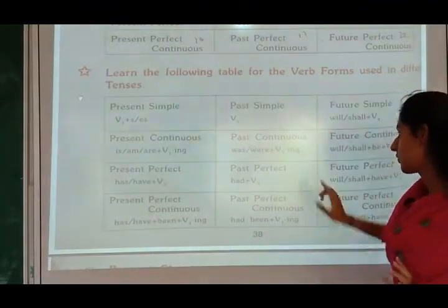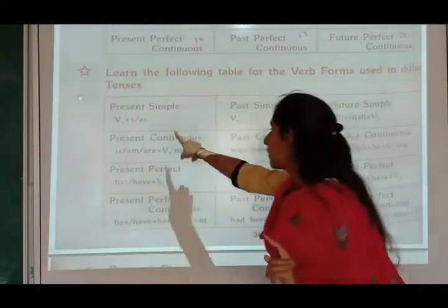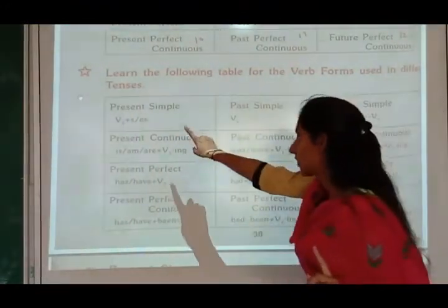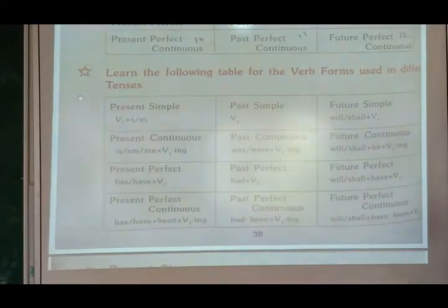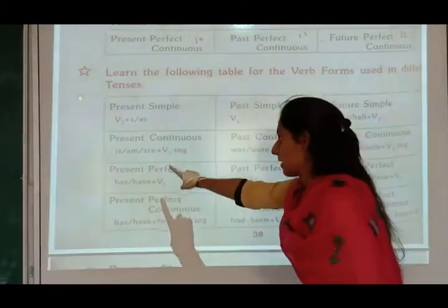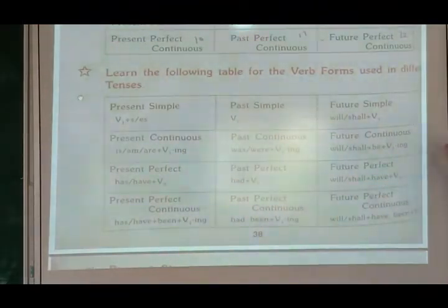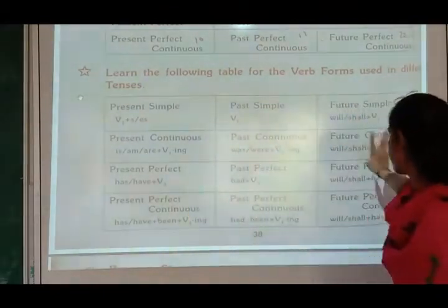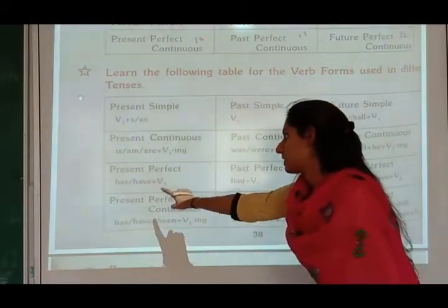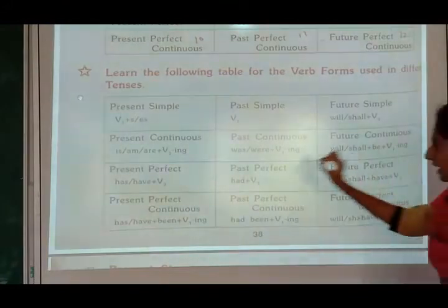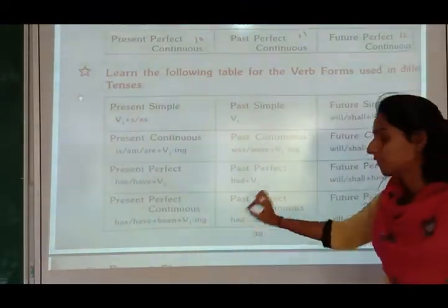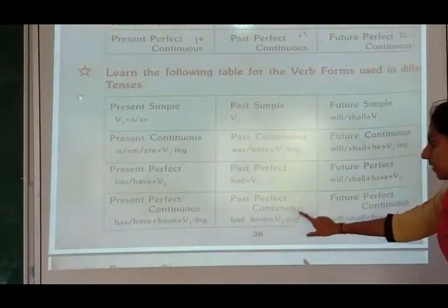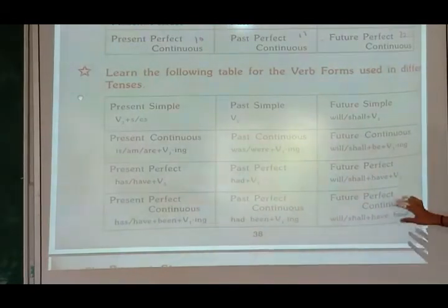In present perfect continuous, has or have plus been is used, and the first form of verb plus ING. Past simple uses the second form of verb. In past continuous, was or were is used, and first form of verb plus ING. In past perfect, had plus third form of verb. In past perfect continuous, had been plus first form plus ING. In future perfect continuous, will/shall plus have been plus first form of verb plus ING.